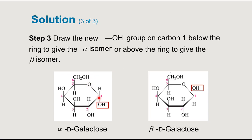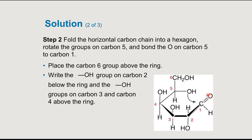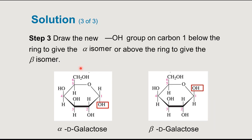Once the oxygen has attacked the carbonyl carbon, we reduce the carbonyl C=O bond on carbon 1 to a single bond, and the hydrogen from the hydroxyl moves over to that oxygen. When we create this cyclic molecule, we can get either the alpha isomer or the beta isomer — both are equally likely. You would draw both: alpha with the hydroxyl below and beta with the hydroxyl above as probable products of the cyclization reaction.